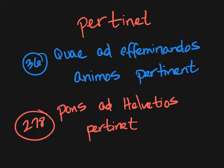Quick note on vocabulary. This chapter uses the verb pertinet. We've seen this verb previously in sentence 36: 'Qua ad effeminandos animos pertinent' — the things which pertain or apply to weakening the minds. In this chapter, we see this verb used in relation to a bridge — a bridge applies or pertains to the Helvetians. How can a bridge apply or pertain to something? If you take that as a literal definition, it's kind of tough. But maybe we can think about the context: the bridge applies or reaches or stretches to the Helvetians.